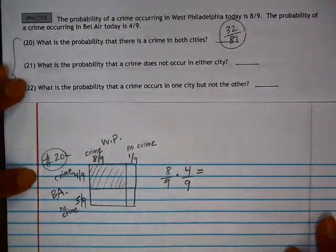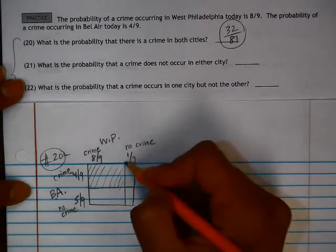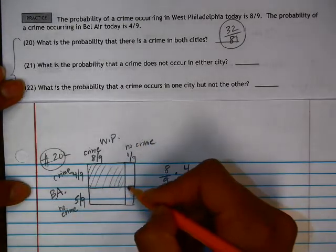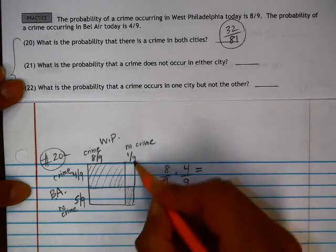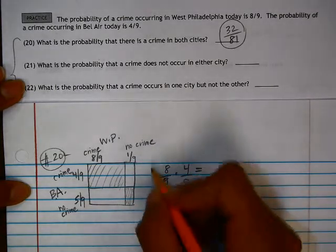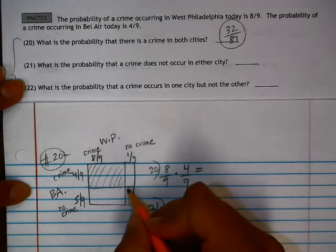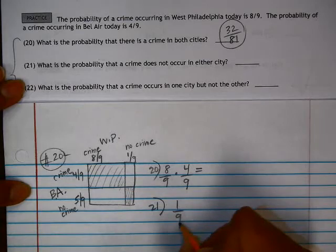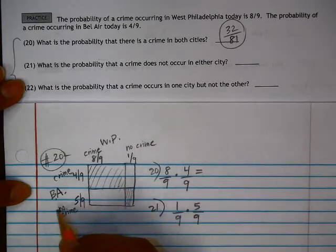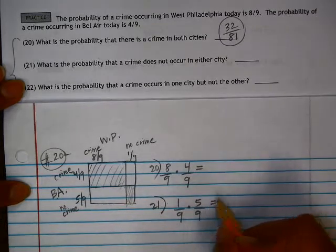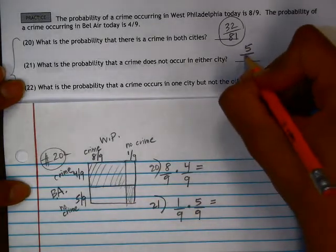In question 21: what is the probability that a crime does not occur in either city? So no crime in both. The probability of no crime in West Philadelphia is 1 ninth. So we have 1 ninth times — right here we have a 5 ninths probability that there is no crime in Bel Air. This can't be simplified any further, so it's 5 out of 81.